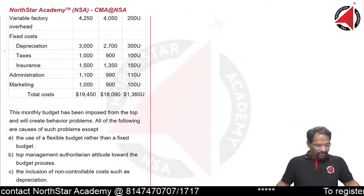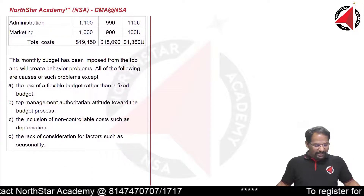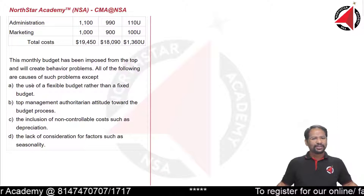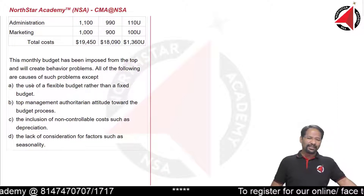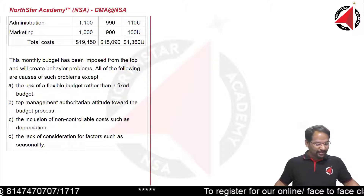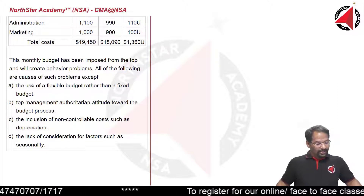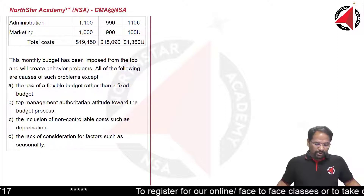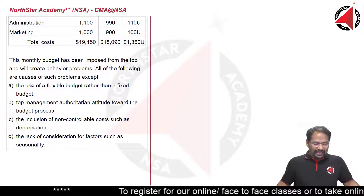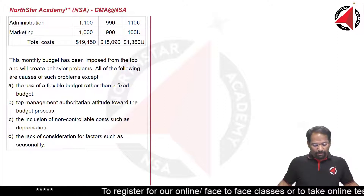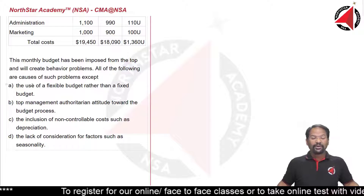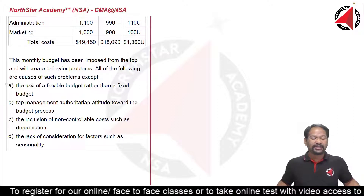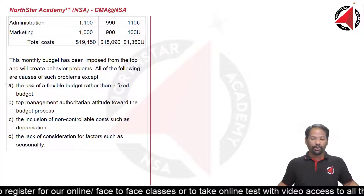Let's look at the options. There are many details but the options do not have any numbers, so basically the question is not asking us to calculate anything. This monthly budget has been imposed from the top and will create behavioural problems. All of the following are causes of such problems — except — meaning which of the following is not a problem.